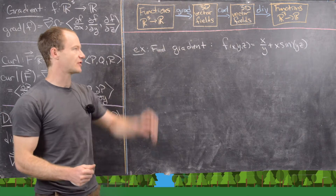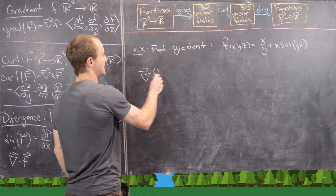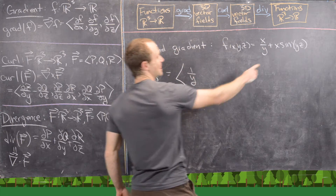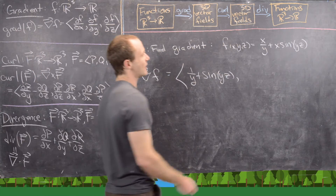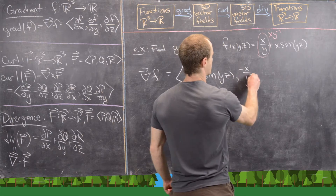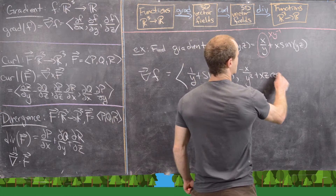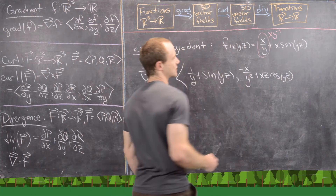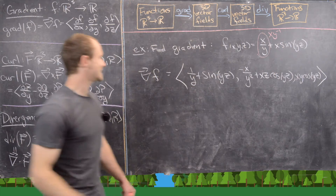Let's do a quick example of each. First, the gradient: find the gradient of f(x,y,z) = x/y + x·sin(yz). The first component is the partial with respect to x: that gives 1/y + sin(yz). The second component is the partial with respect to y: treating x/y as x·y^{-1}, that gives −x/y² + xz·cos(yz) by the chain rule. The third component is the partial with respect to z: the first term has no z, so its derivative is zero, and the second term gives xy·cos(yz).